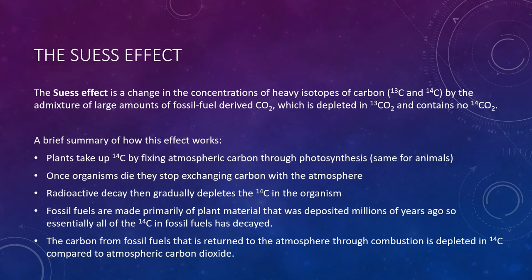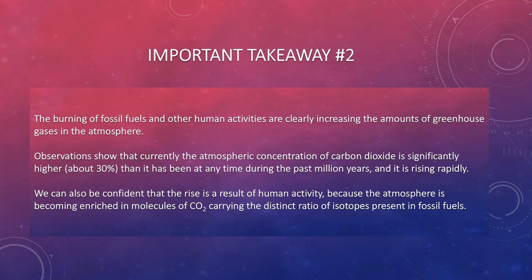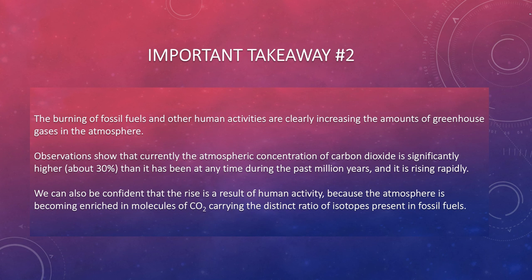With what we've covered thus far, we have reached our second important takeaway at the end of Part 2: the burning of fossil fuels and other human activities are clearly increasing the amounts of greenhouse gases in the atmosphere. Observations show that currently the atmospheric concentration of carbon dioxide is significantly higher — about 30% — than it has been at any time during the past million years, and it is rising rapidly. We can be confident that the rise is a result of human activity because the atmosphere is becoming enriched in molecules of CO2 carrying the distinct ratio of isotopes present only in fossil fuels. In the third part of this lecture, we'll look at temperatures and what effect we're actually having, and what potential consequences we might face.